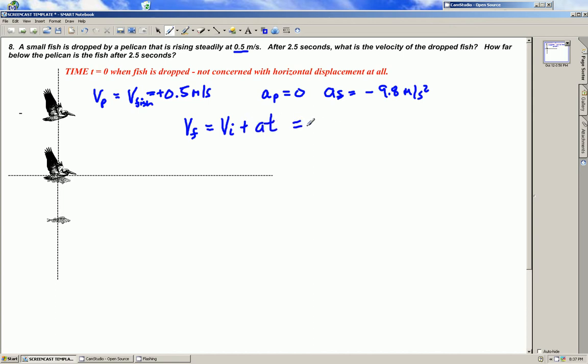Plug in the numbers. We know the initial velocity because the fish was traveling with the pelican at 0.5 meters per second in a vertical direction when it was dropped plus negative 9.8 meters per second squared times the time of 2.5 seconds and these terms reduced to a total of negative 24.0 meters per second.